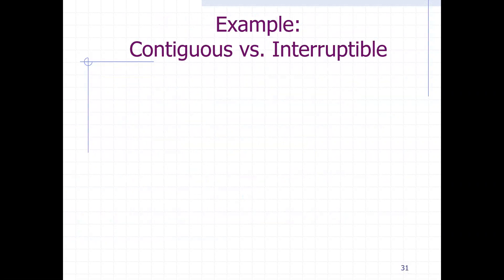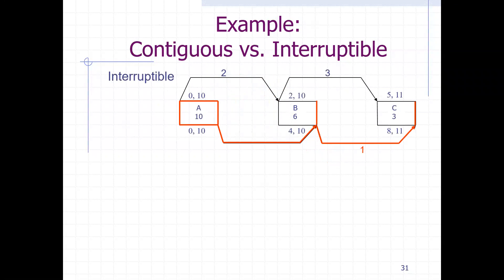So we've talked about the interruptible and contiguous activities, but let's actually understand the differences between them and how do we utilize them. So for the interruptible activities, as you can see from this slide here, A is completely critical activity, but B has a finish restricted date. In other words, B must be completed at 10.